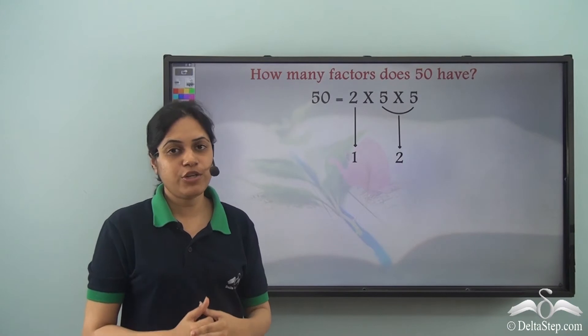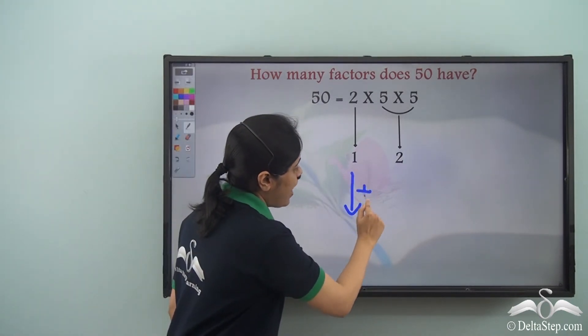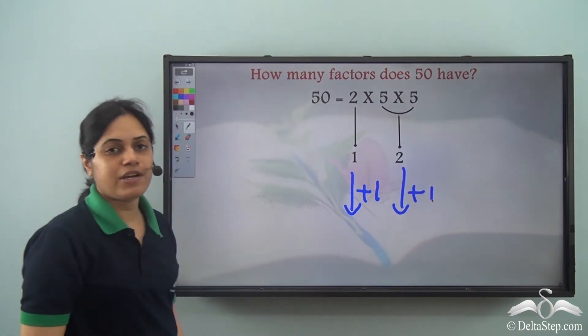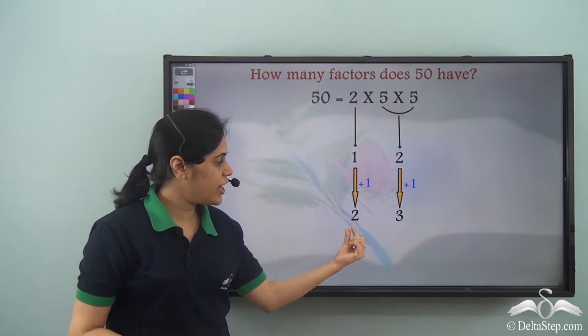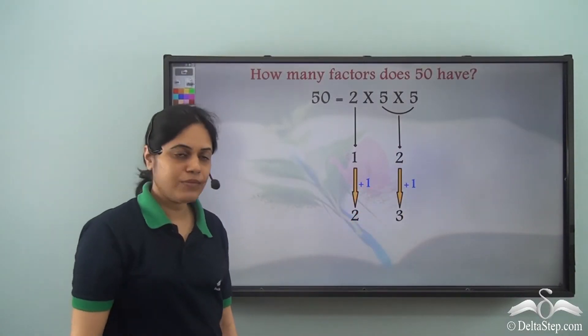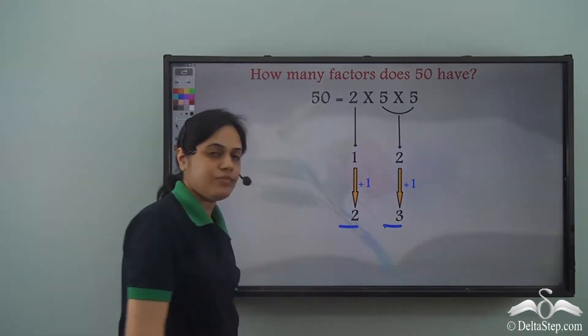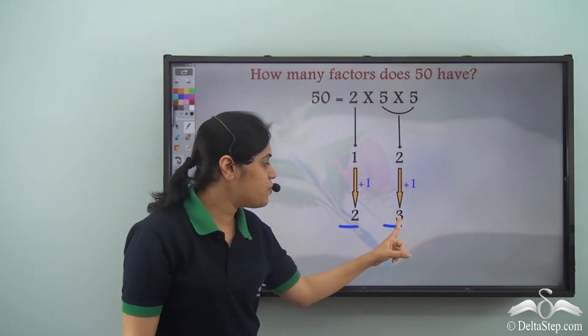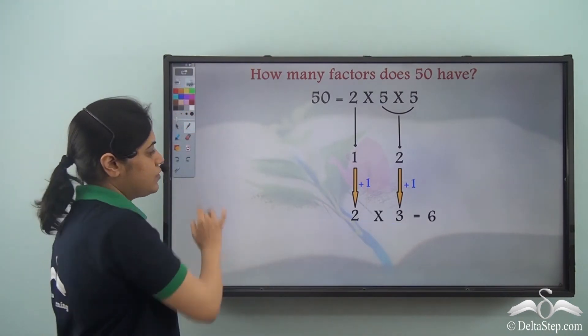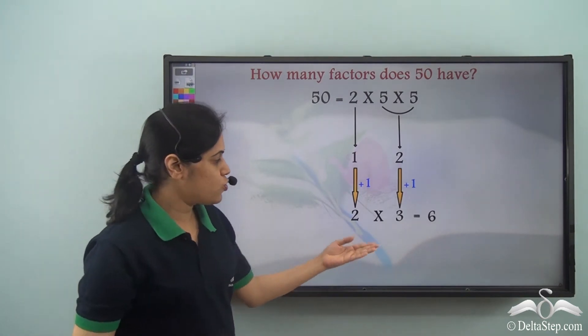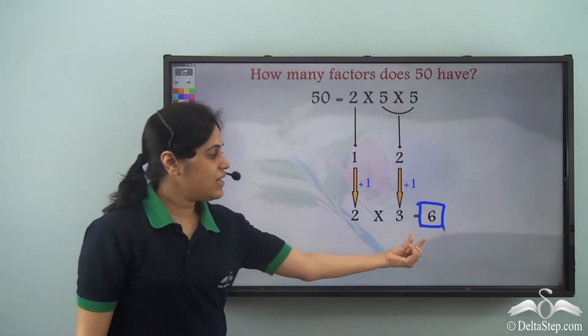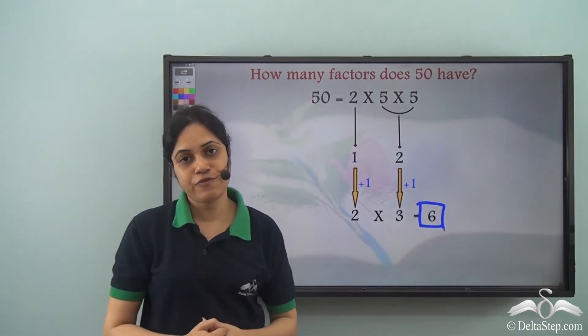Now add 1 to each. So to 1 I add 1 and to 2 I add 1. So I add 1 to each to get 2 and 3. So multiply 2 and 3 to get 6. So 2 into 3 is 6, and this tells me the number of factors of 50.